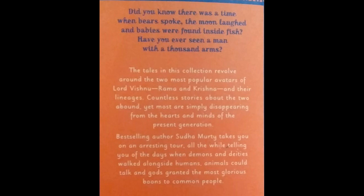Now let me read the blurb of the book. 'Did you know that there was a time when planets hoped, the moon laughed, and babies were found inside fish? Have you ever seen a man with a thousand arms? The tales in this collection revolve around the two most popular avatars of Vishnu — Rama and Krishna — and their lineage. Countless stories about the two abound, yet most are simply disappearing from the hearts and minds of the present generation. Bestselling author Sudha Murthy takes you on an arresting tour, telling you of the days when demons and titans walked alongside humans, animals could talk, and gods granted the most glorious blessings.'